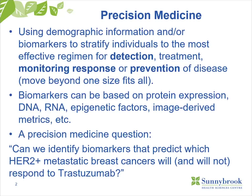A typical question you might pose in precision medicine would be: can we identify biomarkers that predict — and this is one specific study that Dr. Kathy Pritchard has been working on with colleagues — which HER2-positive metastatic breast cancers will respond to Herceptin and which will not, because it's known that there is quite a spectrum of response. If you could figure out which patients' cancers will respond, you could be much more effective at treatment and also more efficient, reducing costs.